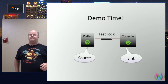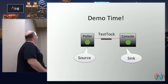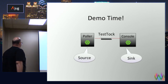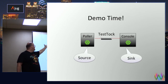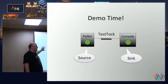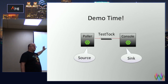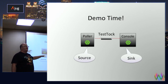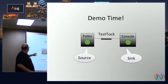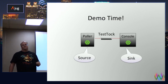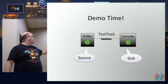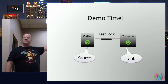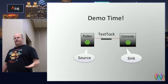So I think it's time for a demo. What we're going to do is create a poller — we'll call it Test Talk. It's going to generate a message once every five seconds and write that out to a console. We're going to use Rabbit as our messaging binder between the two.